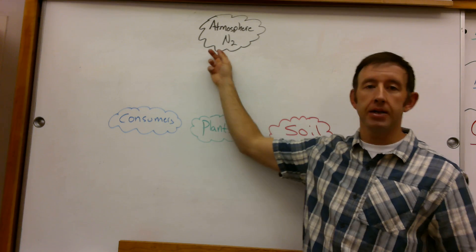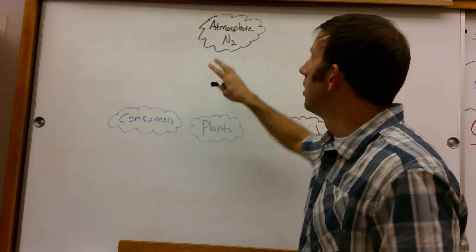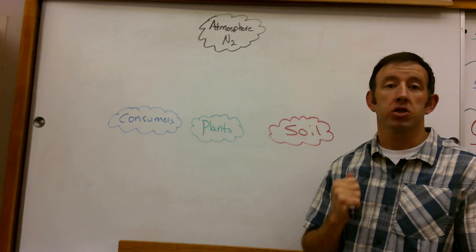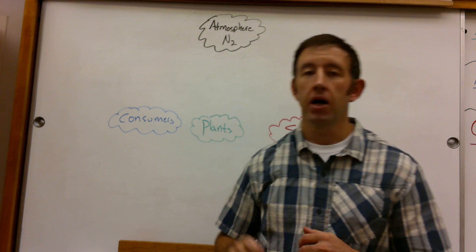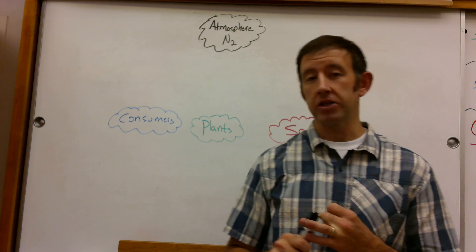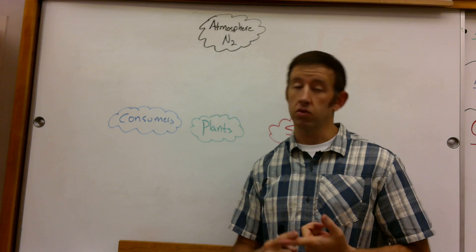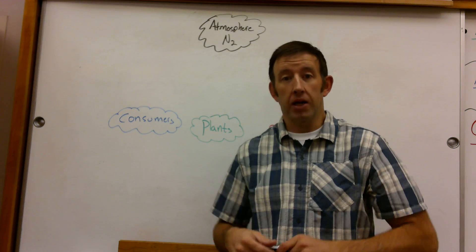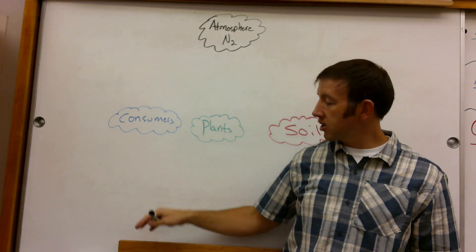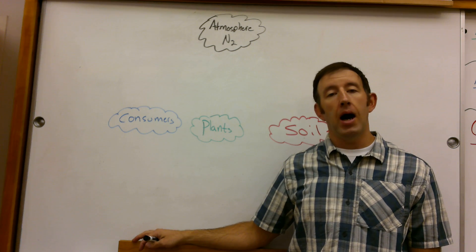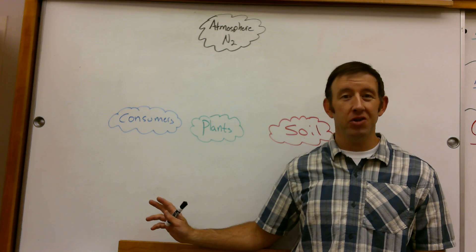We're going to begin essentially with the atmosphere, even though theoretically it's a cycle with no beginning or end. In the atmosphere, we have a large, large, large quantity of nitrogen — so it's not that we're limited in the quantity of nitrogen. We're really limited in the quality of nitrogen, meaning getting nitrogen in the right form that plants can use. Once it's in the plants, it can work its way through the food chain, much like energy does. Nitrogen gas, N2, that diatomic molecule, is about 78% of our atmosphere, but in that form it's not really useful to our living systems.